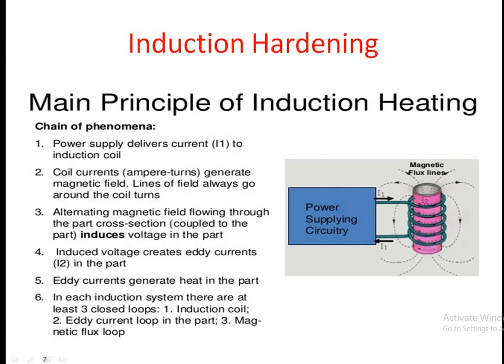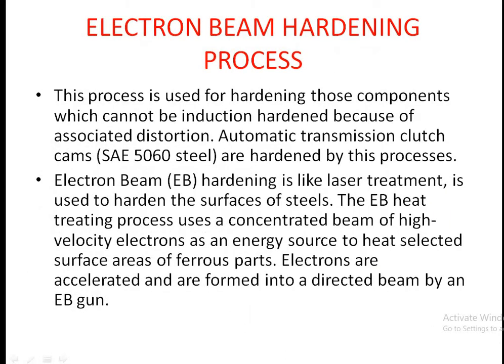The principle of induction heating: the power supply delivers current to the induction coil; the coil current generates a magnetic field; the alternating magnetic field flowing through the part's cross section induces a voltage; this induced voltage creates eddy currents; and the eddy currents generate heat in the part. In each induction system there are three closed loops: the induction coil, the eddy current loop, and the magnetic flux.